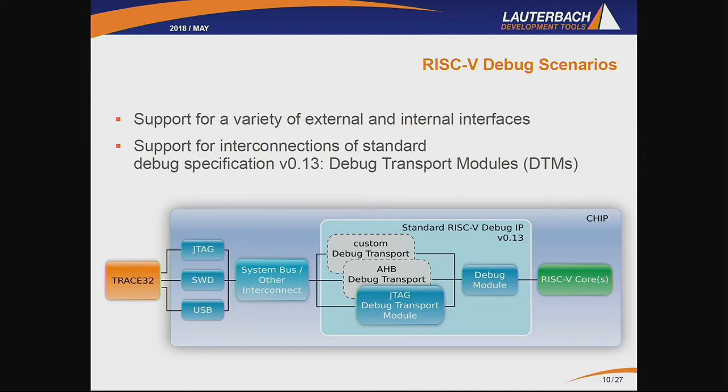Let's look into how this looks in the context of integrating this into a RISC-V system. First of all, there is a component called the debug transport module for the debug specification. This is sort of the interface between the actual RISC-V debug IP and anything that lies beyond that. In the most simple case, that would be just an external debug port — for example, JTAG pins. What is more interesting is if you try to integrate a RISC-V debug IP into an existing more complex chip, for example, a chip with already existing debug IP.